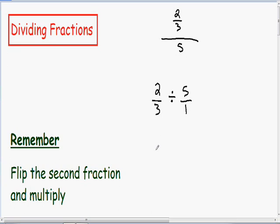So now in order to divide these two fractions, I'm going to multiply by the reciprocal of five over one. The reciprocal of five over one is just one over five. Now I can multiply the two numerators. Two times one is just two, and three times five is fifteen.